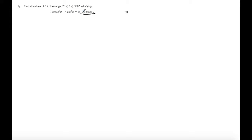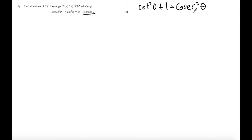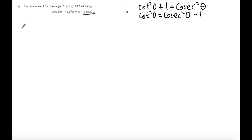In that case, I need to use the identity cot²θ + 1 = cosec²θ, and rearranging this to get a substitution for cot²θ we get cot²θ = cosec²θ - 1. Now I'm going to substitute that into the quadratic.